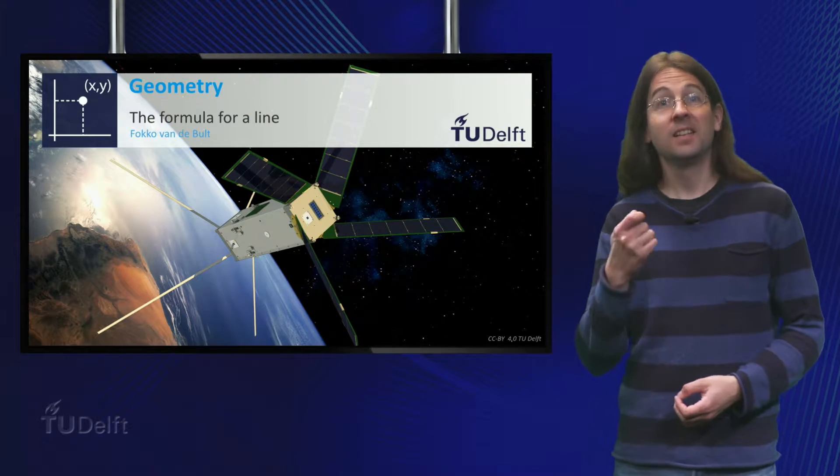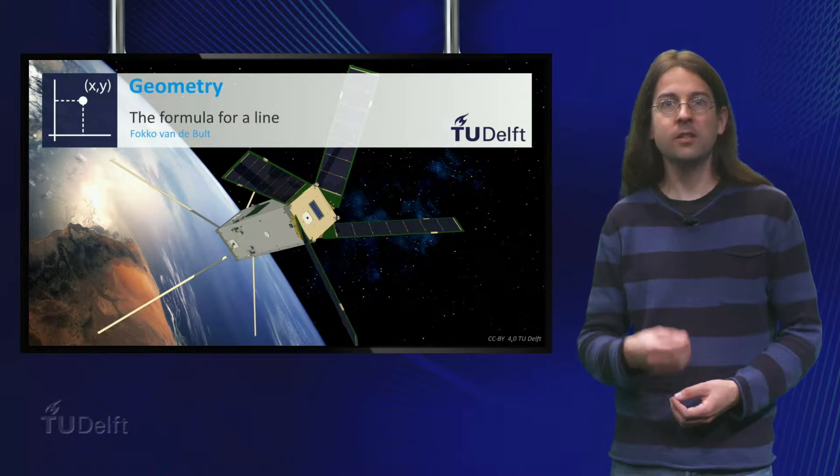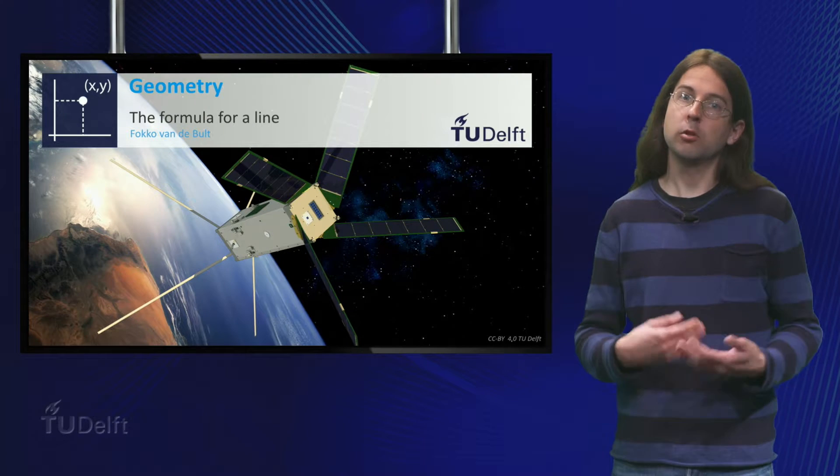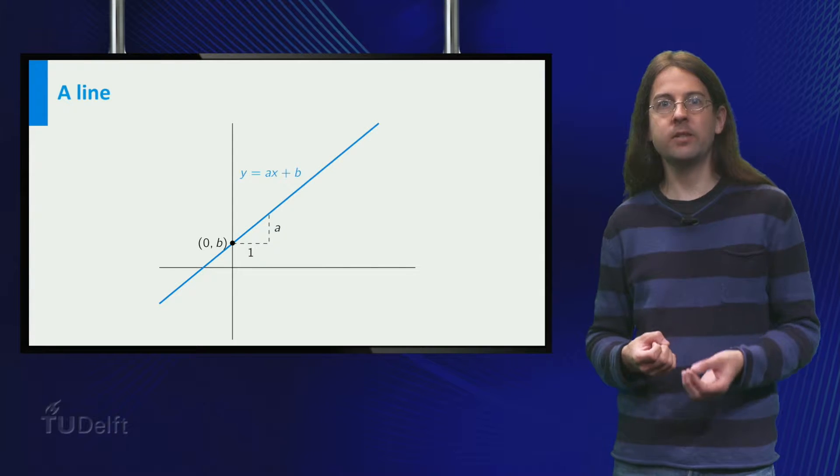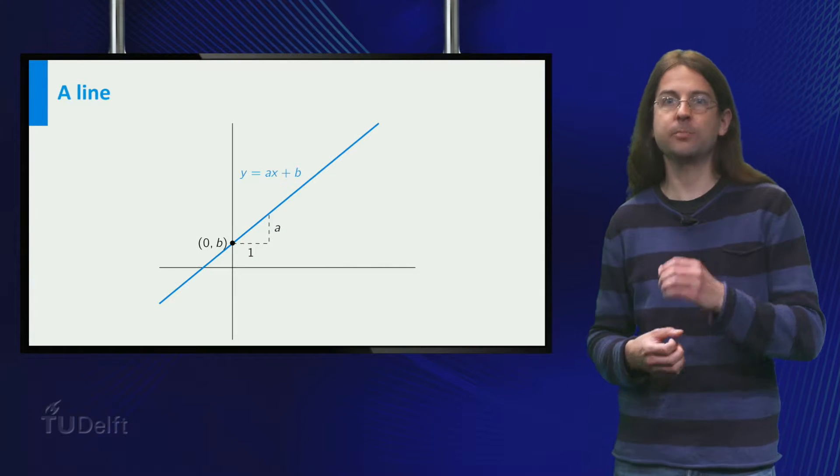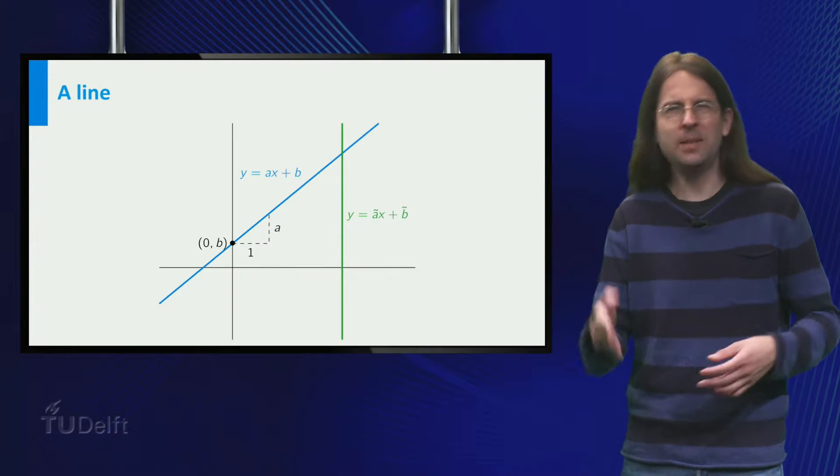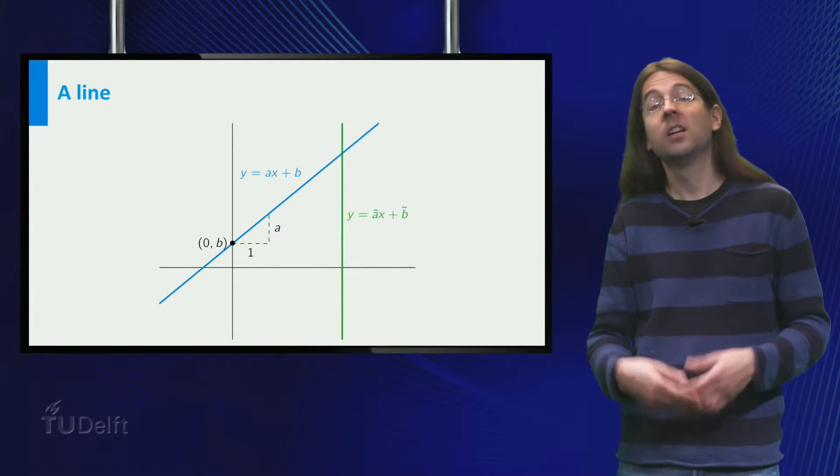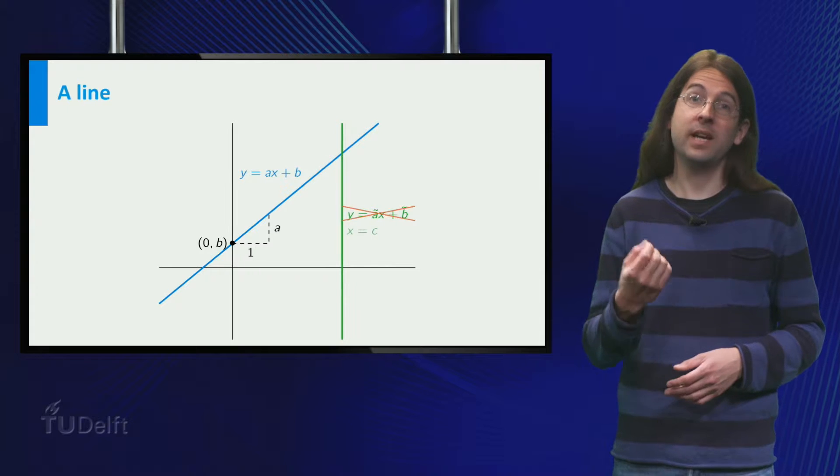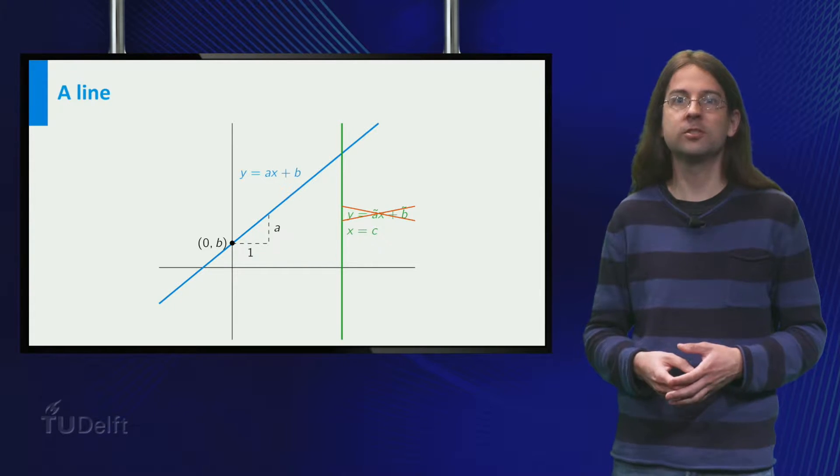Hi all! Let us consider the equation of a line. You are probably familiar with the equation y equals ax plus b. This can describe any line, except for the vertical lines. Those have to be described by x equals c, for some constant c.